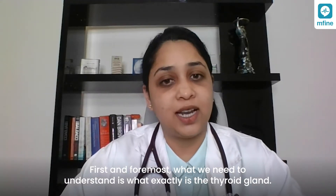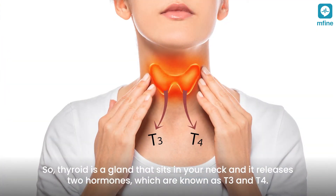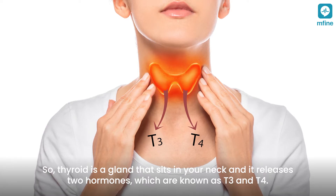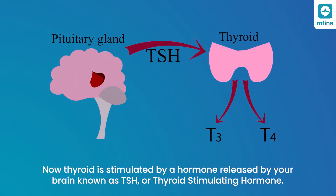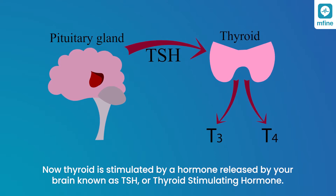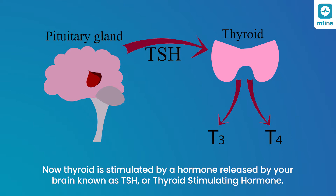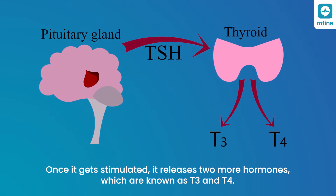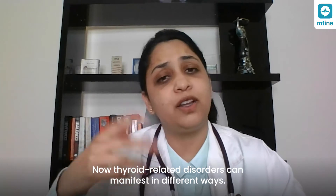First and foremost, we need to understand what exactly the thyroid gland is. The thyroid is a gland that sits in your neck and it releases two hormones known as T3 and T4. The thyroid gland is stimulated by a hormone released by your brain known as TSH, or thyroid stimulating hormone. Once stimulated, it releases T3 and T4.